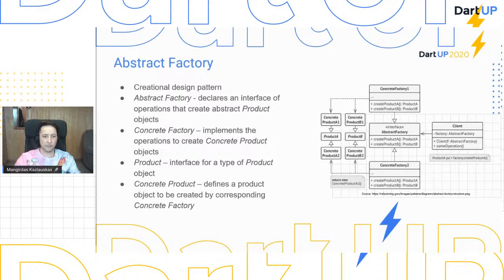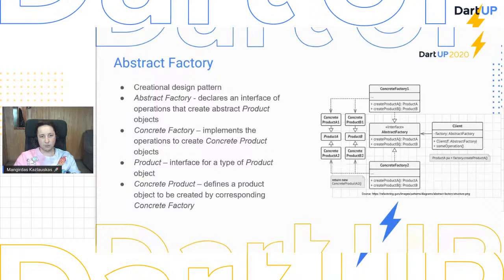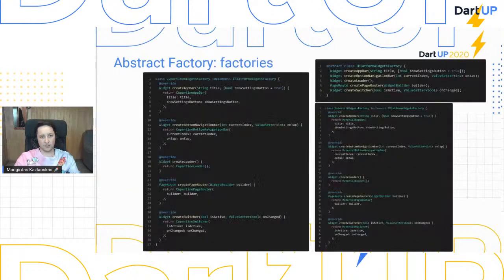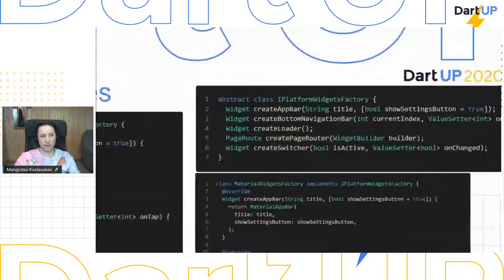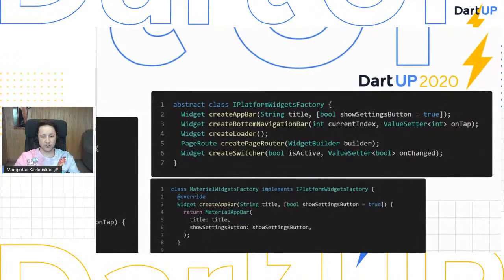The specific concrete products should follow the same product interface — not the same interface as the abstract factory, but a single product interface which can differ among types of products. In Flutter's case these classes could be skipped because we have stateless or stateful widgets as a single widget base class, so we can just extend those classes. In our specific example, since Dart does not really support interfaces as a class type, we define an abstract class with methods that have no default implementation — we consider this as an interface.